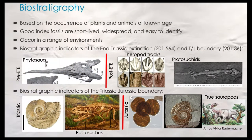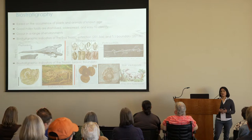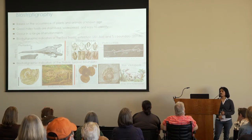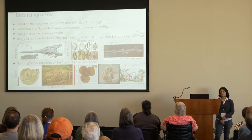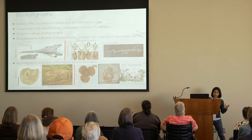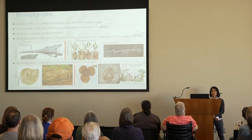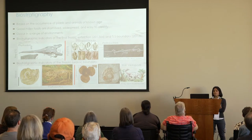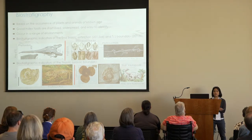Biostratigraphy is based on the occurrence or absence of particular plants and animals of known age. To be a good biostratigraphic indicator, a fossil should be an index fossil — short-lived, widespread, easy to identify, and occurring in a range of different environments. Pre-end-Triassic extinction animals include things like phytosaurs, and post-end-Triassic extinction animals include Eubrontes tracks — those large theropod tracks — and little crocodylomorphs. For the Triassic we have various ammonites and things like Postosuchus, and for the Jurassic we have various types of pollen.